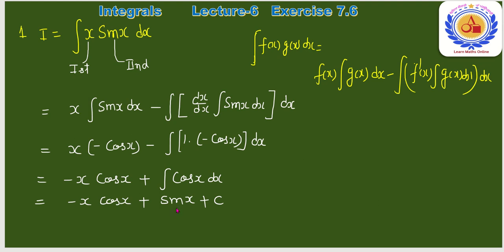cos(x) की integration sin(x) है। So the final answer is −x·cos(x) + sin(x) + C (constant of integration).